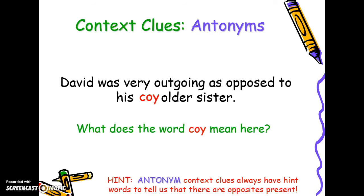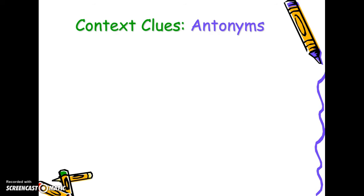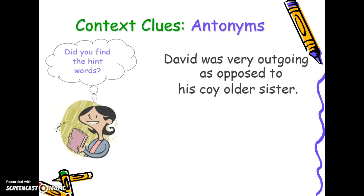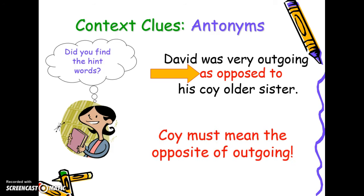Now you try. 'David was very outgoing as opposed to his coy older sister.' What does coy mean here? The phrase as opposed to hints that you're looking for an opposite of the word coy. So coy must mean the opposite of outgoing. You would highlight the word outgoing.